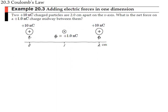This next problem is one step more complex because it involves three charges. We have 10 nC and 10 nC, both positive, separated from a third charge by 1 cm each. What is the net force on the charge in the middle? It's easy to see the net force is zero: the left charge repels the middle charge to the right, and the right charge repels it to the left, with equal magnitude and opposite direction.